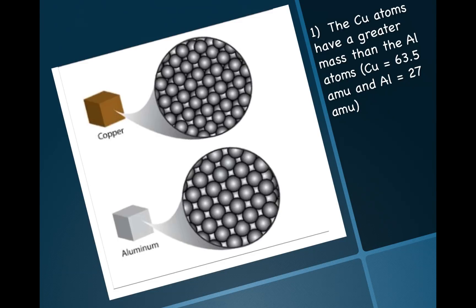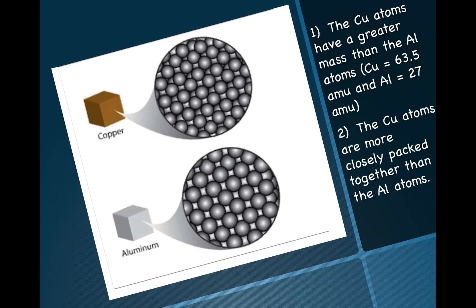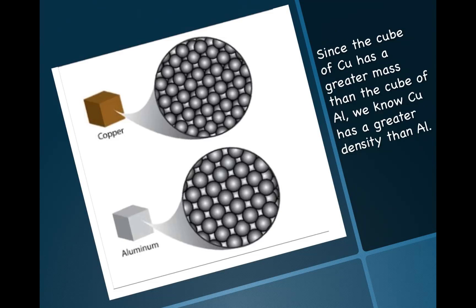But the mass of the individual atoms is not the only factor that affects density. The other factor is the arrangement of the atoms. Notice that the copper atoms are more closely packed together than the aluminum atoms, meaning you have more mass squeezed into the same amount of space. Since the cube of copper has a greater mass than the cube of aluminum, we know that copper has a greater density than aluminum.